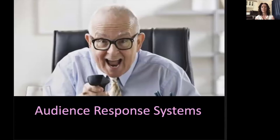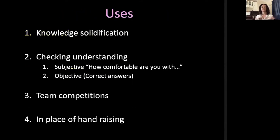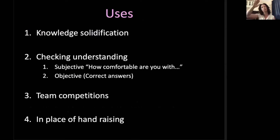Audience response systems are ways to engage learners, and this works very well virtually or in person. Some options: Poll Everywhere has a free option for up to 40 people — past that, many universities already have subscriptions. There's Slido, Socrative, Kahoot — one of our favorites, free and works really well — and Mentimeter. We're going to talk about Poll Everywhere and Kahoot today. Uses include: solidifying knowledge, checking understanding, and giving people an opportunity to anonymously ask questions. People are often hesitant to raise their hands and say they don't understand. You can also objectively assess whether everyone has the correct answer, use them for team competitions, and in place of hand-raising.